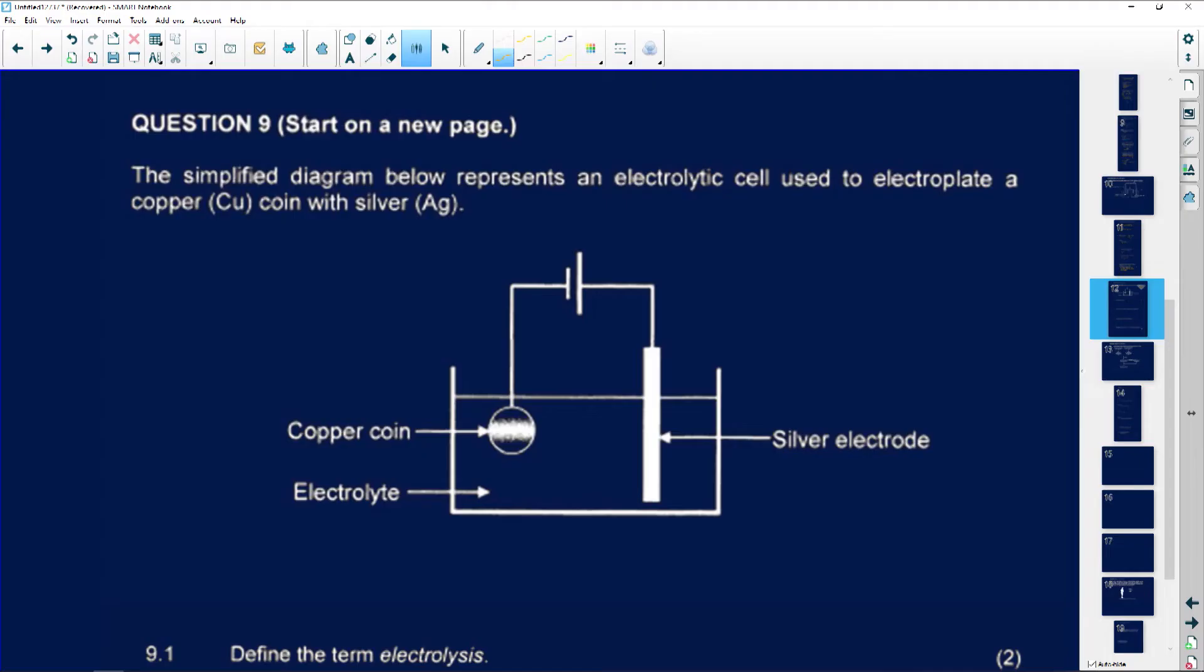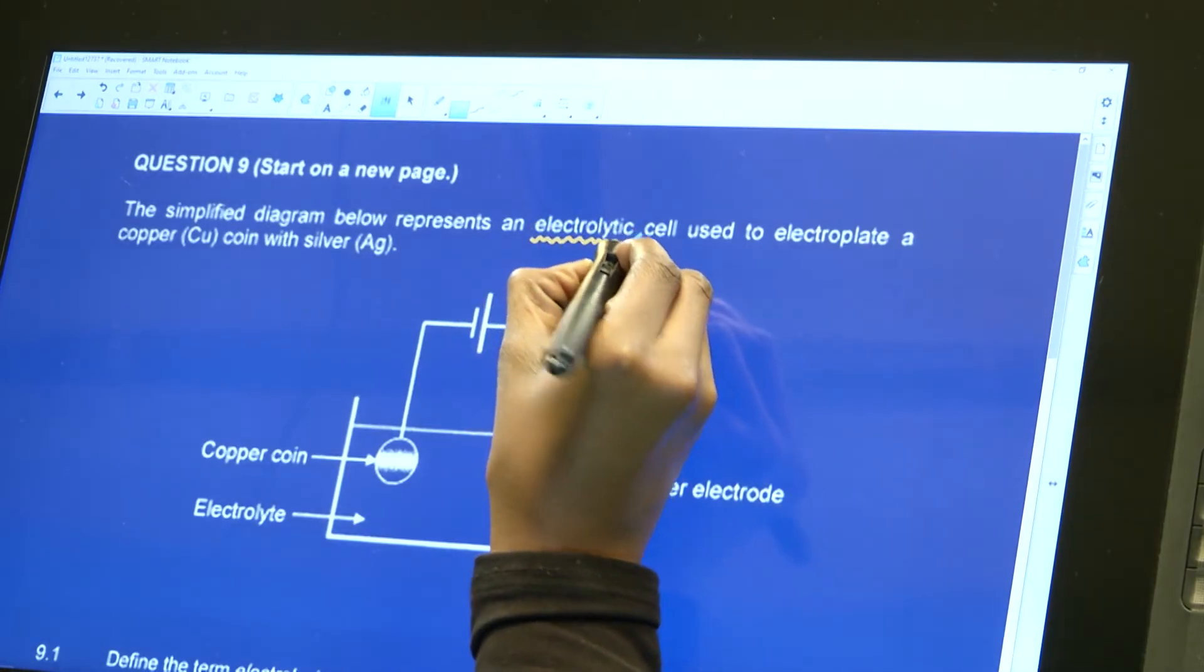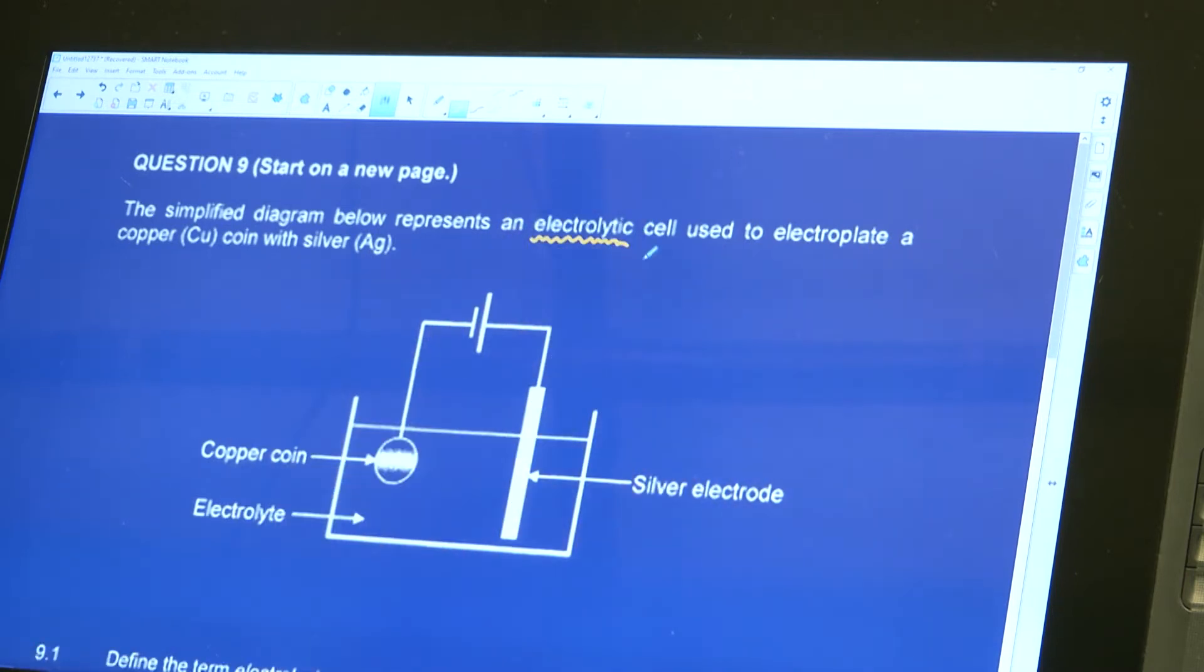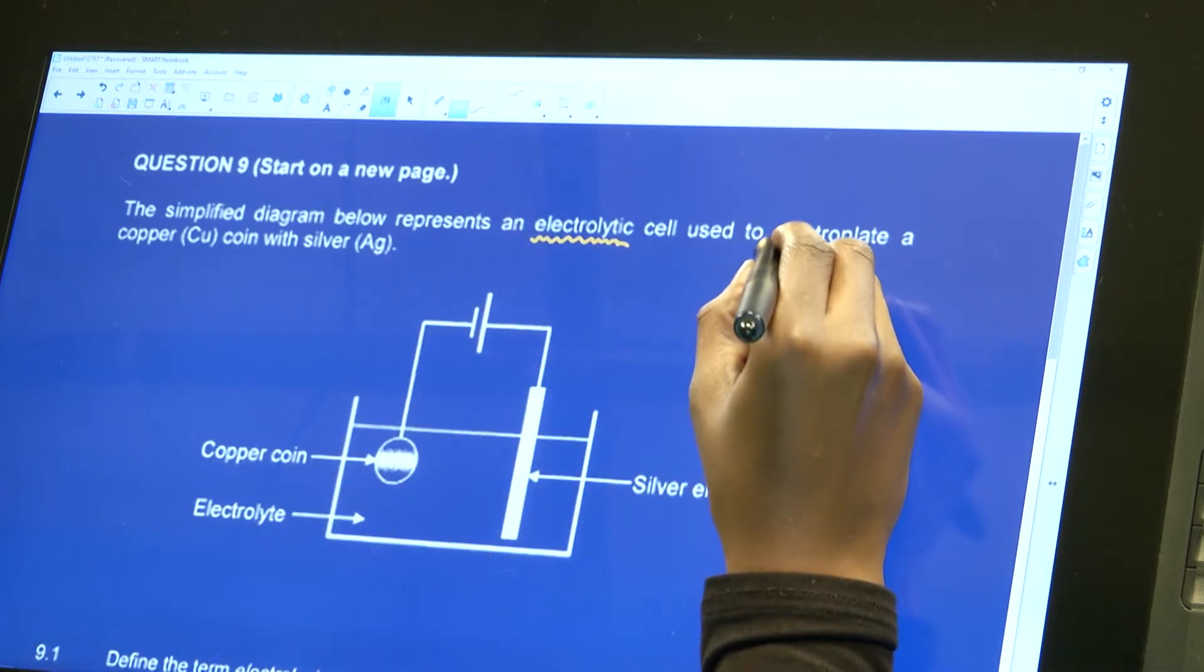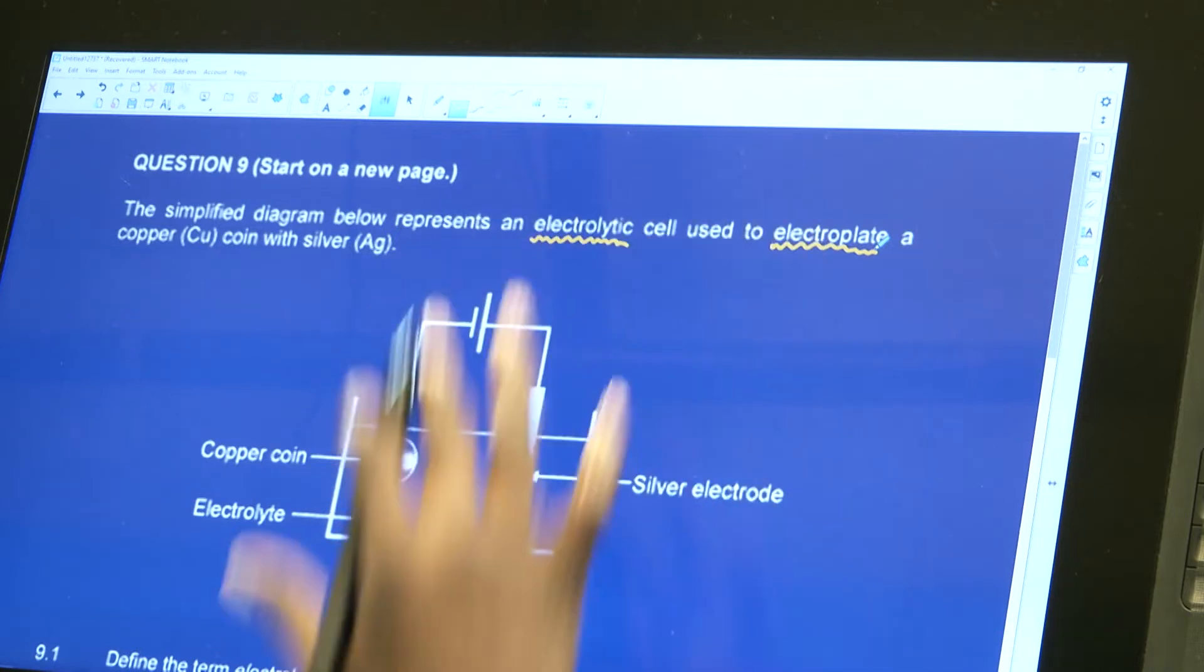Now we're looking at question number nine. The simplified diagram below represents an electrolytic cell. There's a big difference between this one and the one we just did. This represents an electrolytic cell used to electroplate a copper coin with silver.